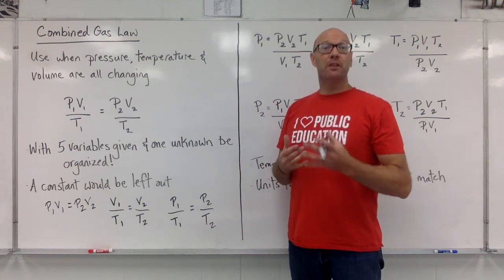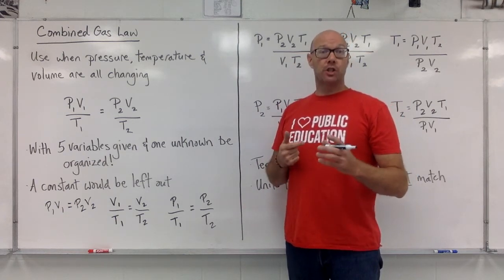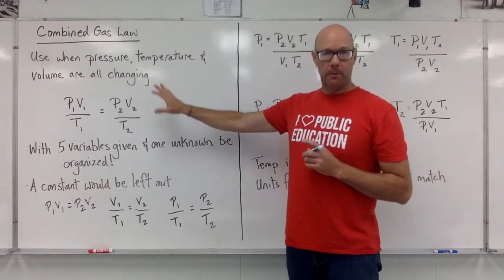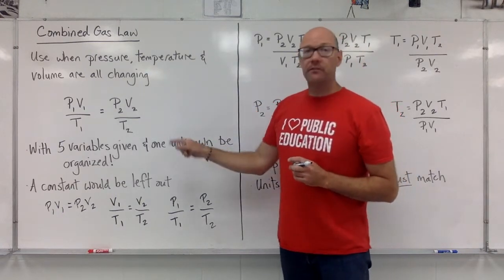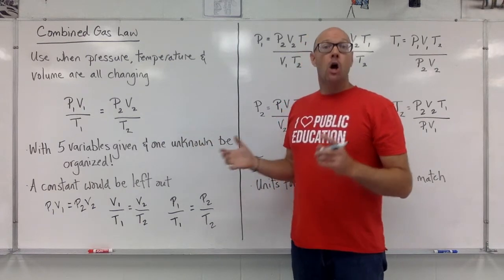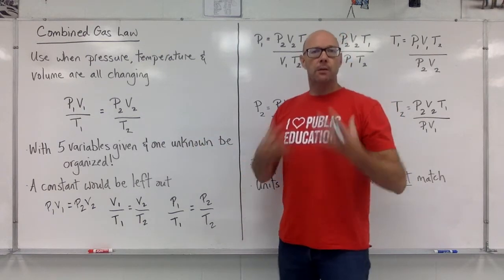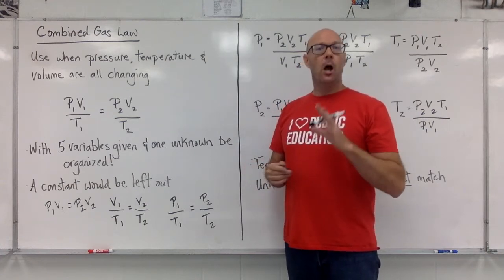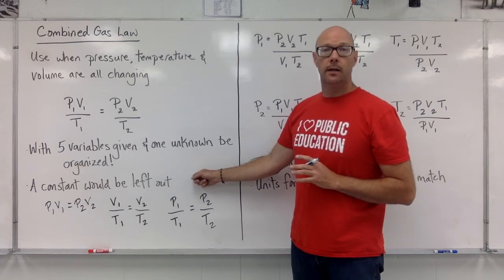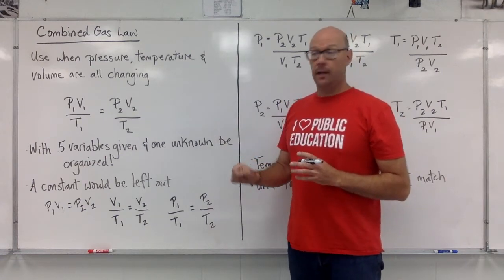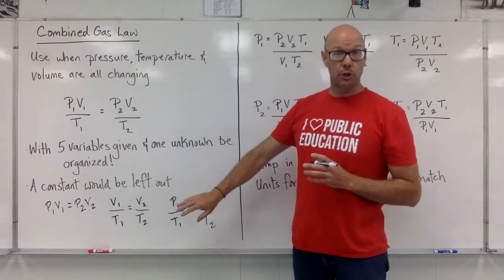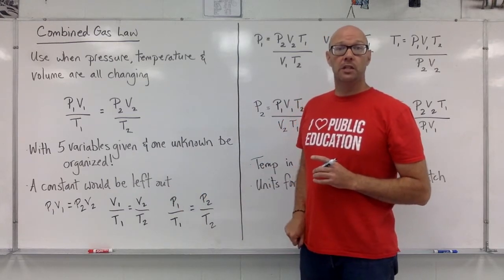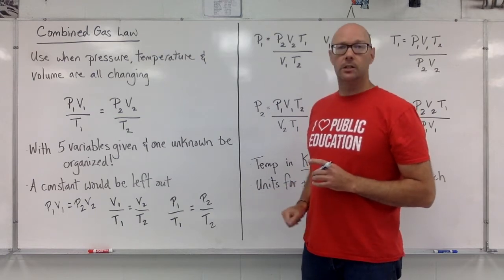One more time. If everything is changing, pressure is changing, volume is changing, and the temperature is changing, we'll use the whole combined gas law. That's where there's five numbers, and we're looking for a sixth. Don't be surprised if you arrive at a question, you might have the built-in expectation that I'm going to do a combined gas law. But if something is constant, we're going to leave it out of the equation itself to end up back at one of our original two laws or this sneaky hidden one, P1 over T1 equals P2 over T2.